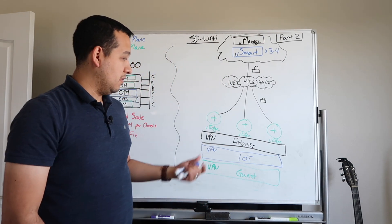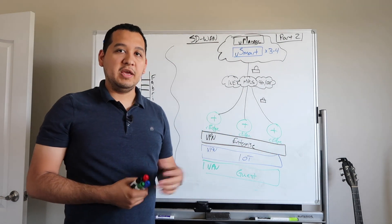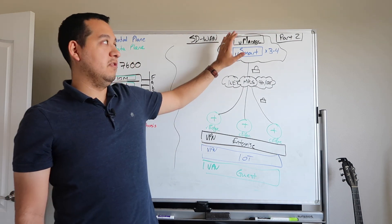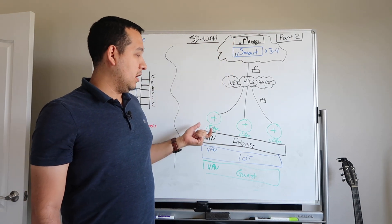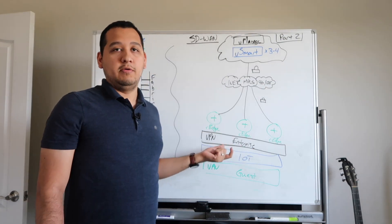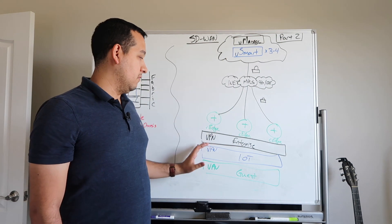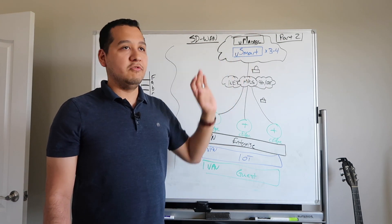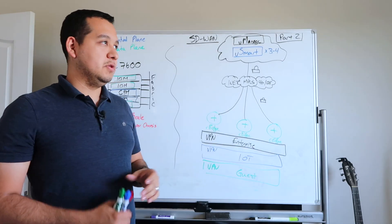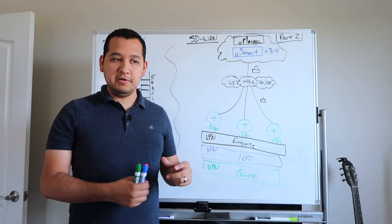All of these are going to be across all of your C edges and V edges, and all of that is done through the V manage and propagated out through all of your different routers. All the routing, all the VRFs and VPNs are done and centralized through the Vsmart. And of course, this is all done through a graphical user interface in the Vmanage, which makes it extra easy to use.